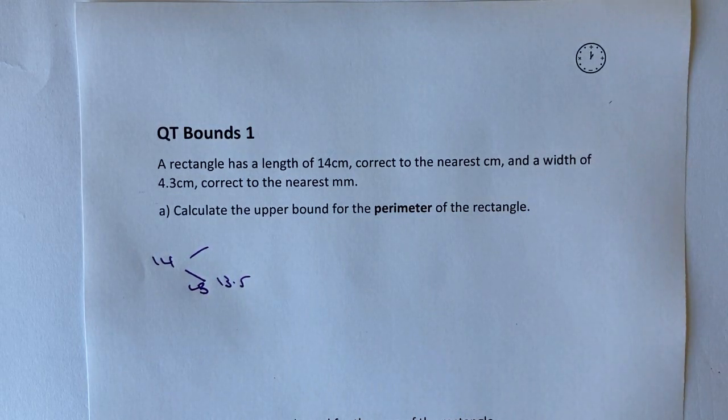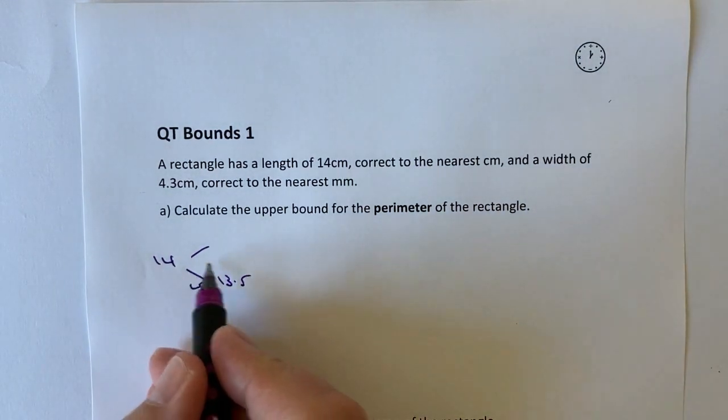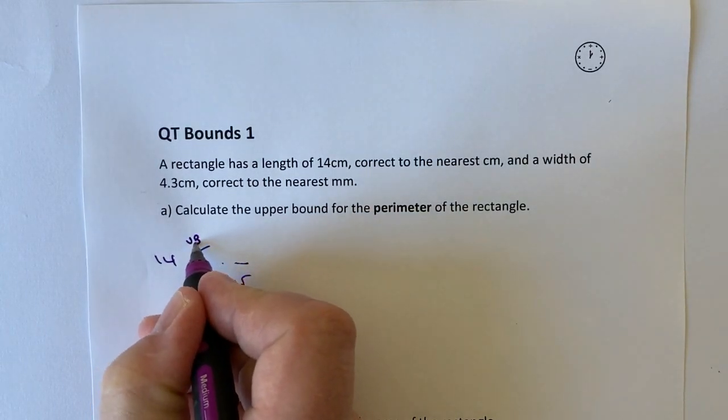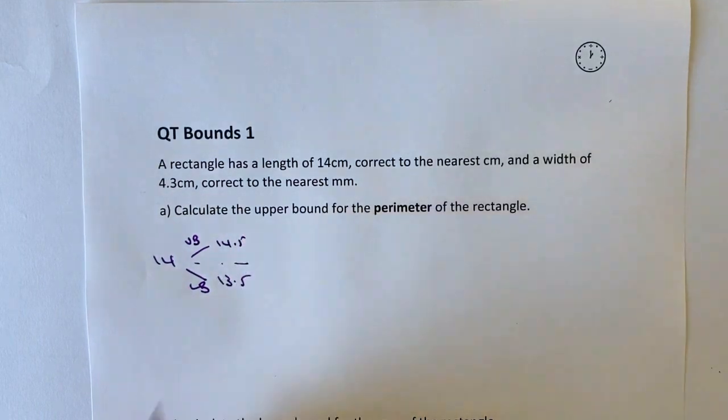Now with bounds, we're really talking more about tolerances, so it's not really rounding. You've got to be a little bit careful about that. What we're saying is that ideally it's 14, but actually it's 0.5 below, so the upper bound would be 14.5.